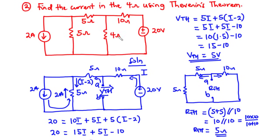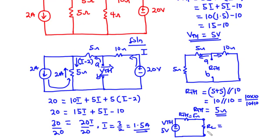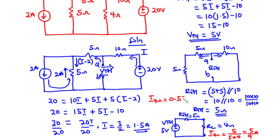Now let's find the current flowing through the 4-ohm resistor using the Thevenin equivalent circuit. We have VTH equal to 5 volts, RTH equal to 5 ohms, and the load resistor of 4 ohms connected in series with RTH. The current through the 4-ohm resistor is I equals VTH divided by RTH plus RL, which gives 5 divided by 5 plus 4, equal to 5 over 9 amperes, which is approximately 0.556 amperes.